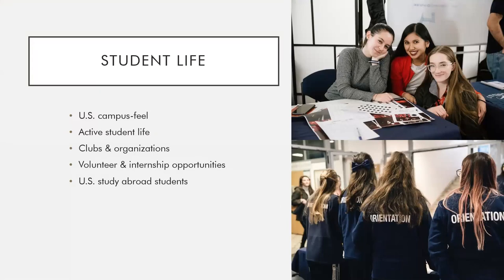John Cabot has a campus feel similar to a university in the States. Student life is very active with a variety of clubs and organizations, and there are volunteer opportunities available as well. One thing to note is that a huge number of US students study abroad at John Cabot. As such, it may be harder to meet Italians who are used to study abroad students frequently coming and going and are less interested in forming short-term relationships. Getting involved on campus, exploring internship options, and taking classes with local students can be ways to build those connections.